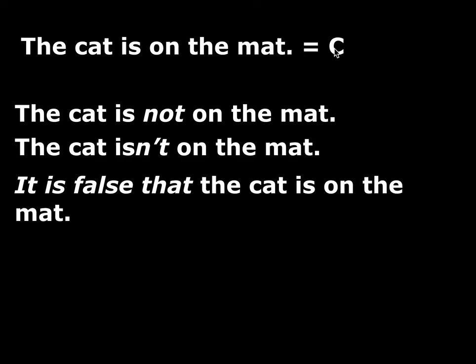If I assign the capital letter C to that atomic statement 'the cat is on the mat', then all of these negated versions of that atomic statement we could write as tilde C. So the tilde is the symbol we're going to use for negation. And again sometimes people use different symbols. Don't worry about that.